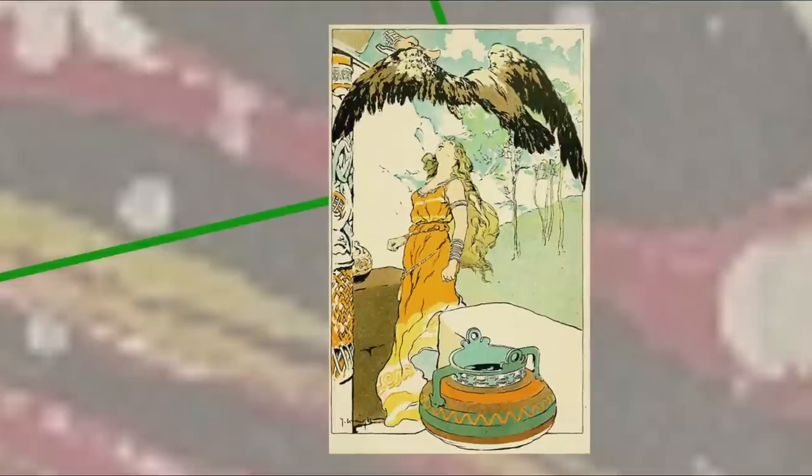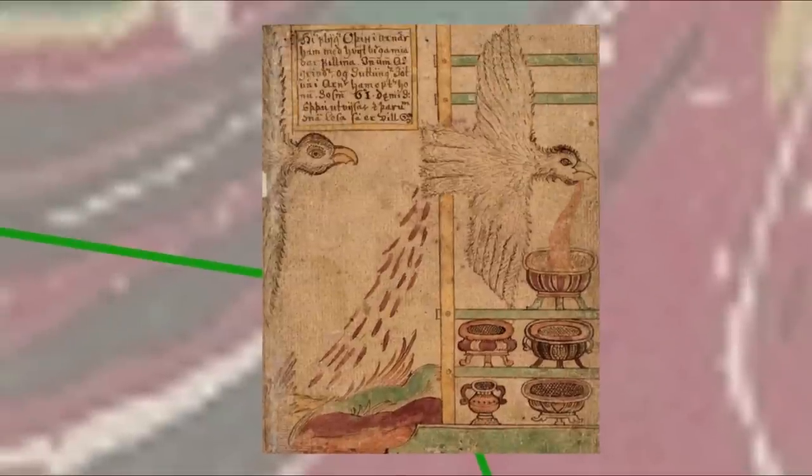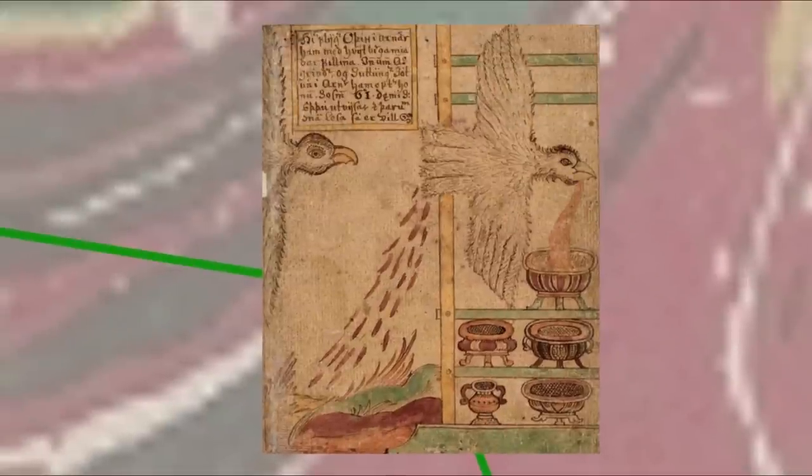Odin then transformed into an eagle to escape with the mead, but Suttungr also transformed into an eagle to chase him, and with Suttungr in hot pursuit Odin accidentally allowed some of the mead to leak out behind him. I'll leave you to ponder what exactly that means. When Odin reaches Asgard, he spews up the rest of the mead into containers set out by the other gods, and so the mead of poetry was given to the gods and those humans who were gifted at poetry.